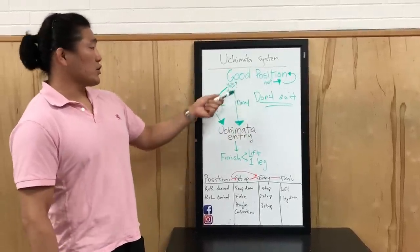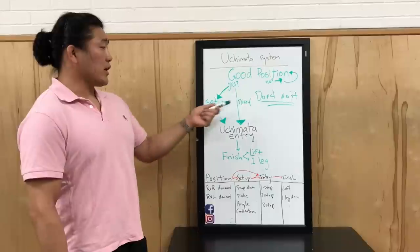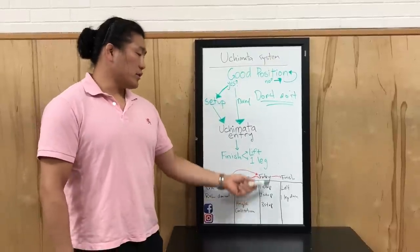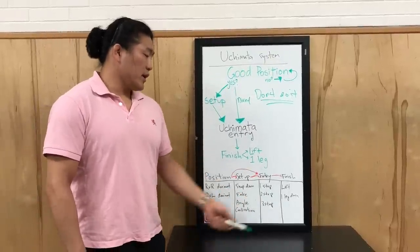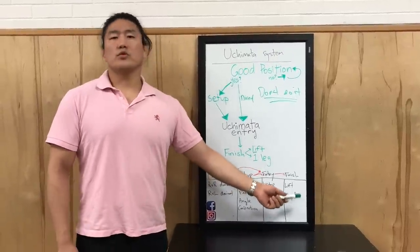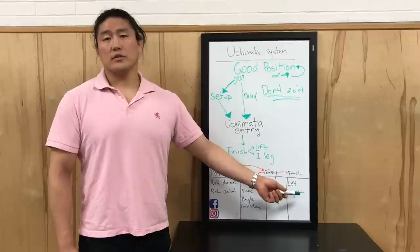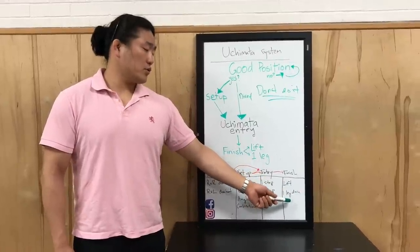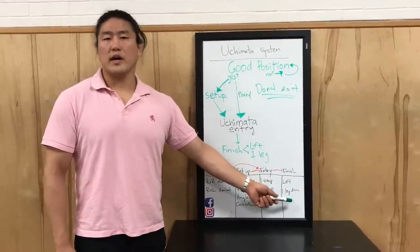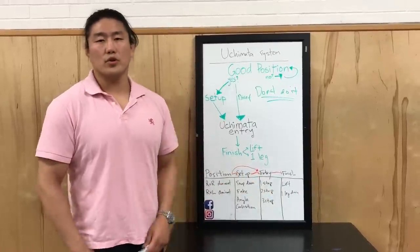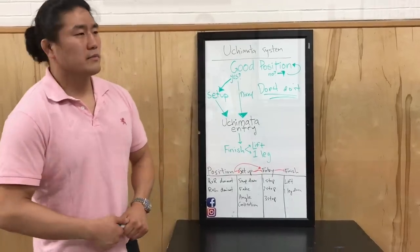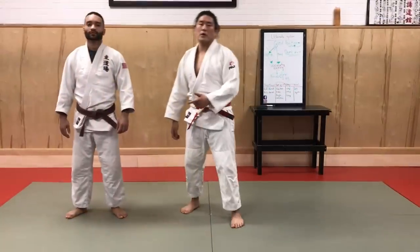So it all starts with good position — yes or no. If you don't have good position, don't do Uchimata. Fight for position first, get the good position. Then you set up or go direct. You have these three types of entries and then these two types of finishes. We could eventually break these down into subcategories too, so stay tuned for that.